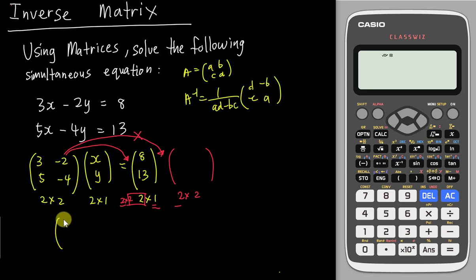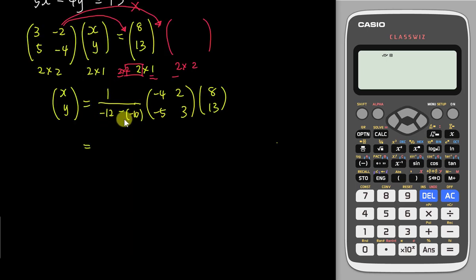I will just do like this. This is XY. Right now I want to do 1 over (AD × -4, which is -12, minus BC, -10). Which is -2 times 5, and then A and D we swap place, -4 and 3. B and C we add a negative. So it will be 2 and -5. And then we multiply with 8 and 13. This one will be -12 + 10. So it will be -2. Of course, you can use the calculator for -12 + 10. You will get -2.